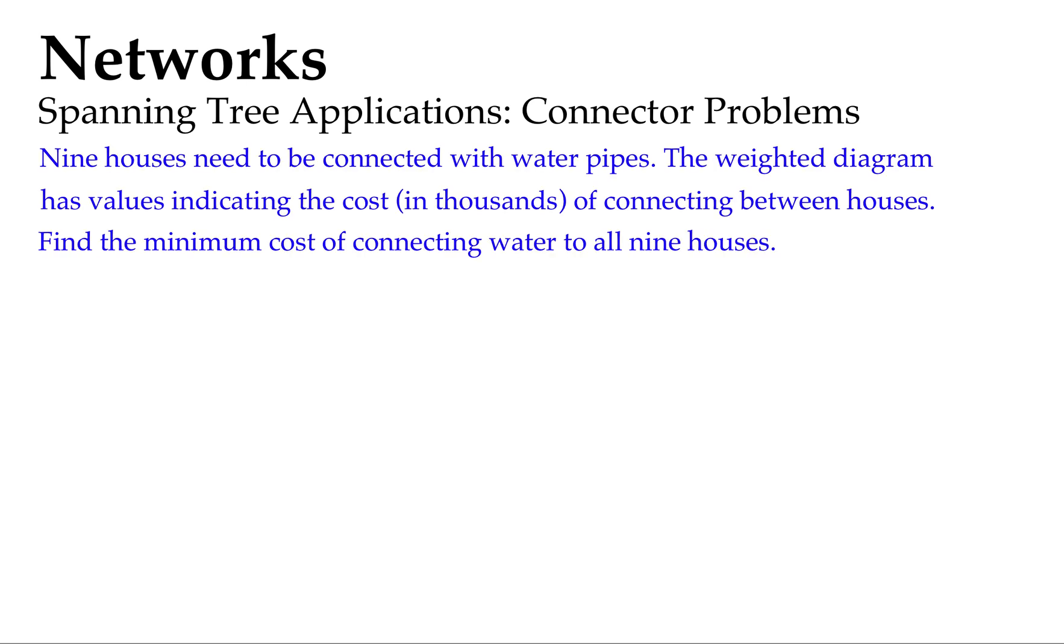I made up a question here I'm quite proud of. Nine houses need to be connected with water pipes. The weighted diagram, which is just about to appear underneath, has values indicating the cost in thousands of dollars of connecting between houses. We're going to find the minimum cost of connecting water to all nine houses by using Prim's spanning tree application.